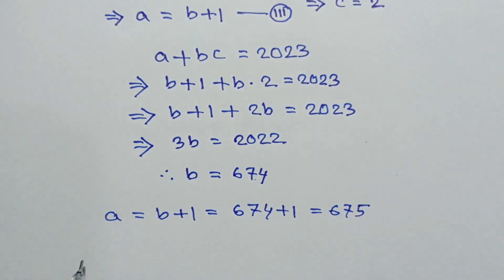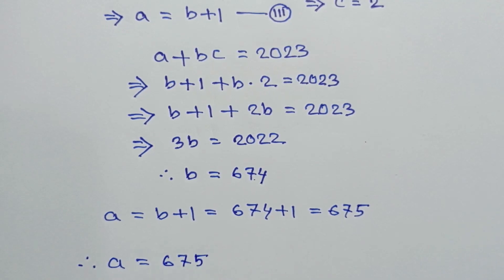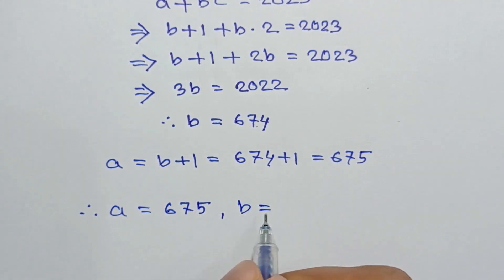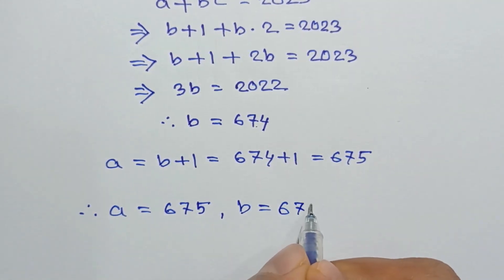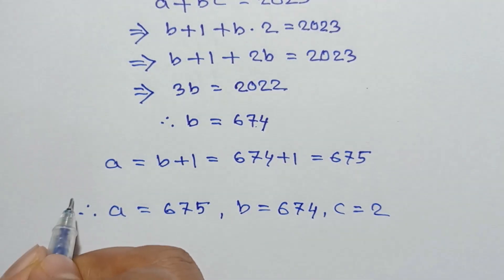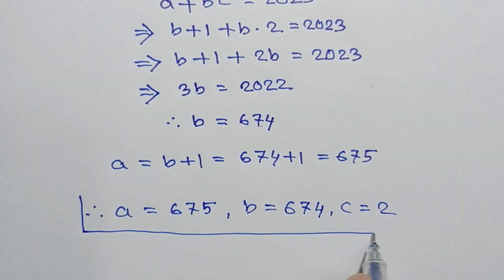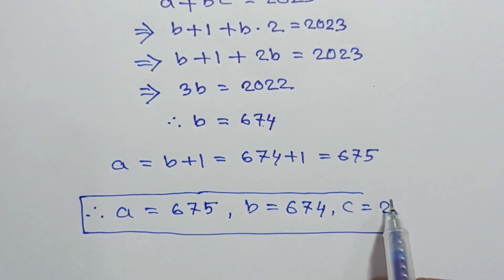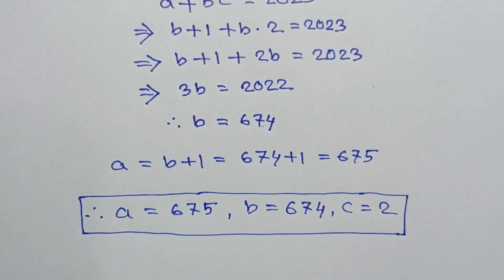So we can write a equals 675, b equals 674, and c equals 2. This is the solution to this system of equations. If you like this video, please subscribe to my channel. Thanks for watching.